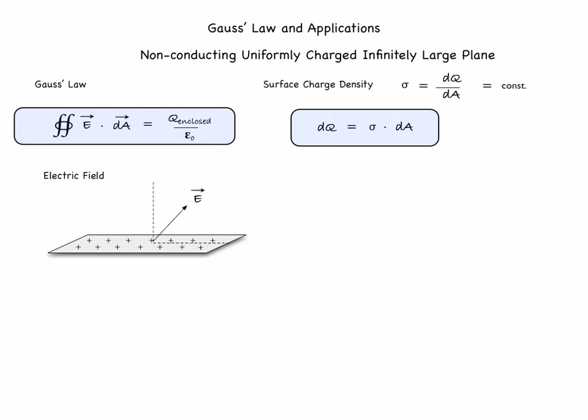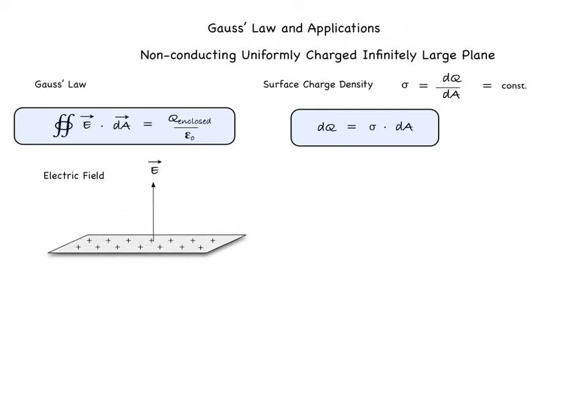Some information can be deduced by looking at the symmetry of the charge distribution. The electric field points away from the positive charges. If we say it points up and to the right, then rotating the plane 180 degrees — it coincides with itself — but now the field must point up and to the left. Since the plane always coincides with itself under rotation, the only consistent solution is that the electric field has only a component perpendicular to the plane, pointing away from it.